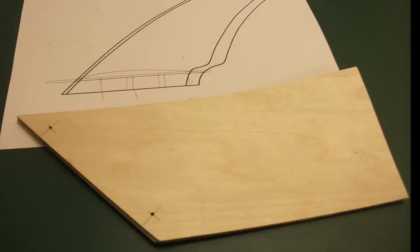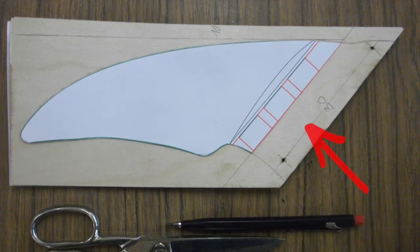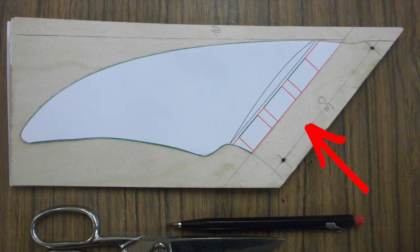After that, I draw the outline of the fin core onto the blank. On the base of the fin, I give it an extra 30 millimeters so I can keep the fin in position while I am laminating inside the mold.